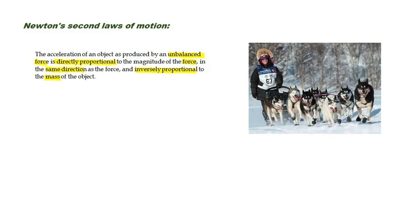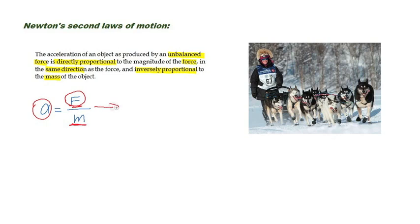In simple terms, a equals F over m. When we have an unbalanced force, we will have acceleration. This acceleration is proportional to the amount of the unbalanced force and inversely proportional to the mass of the object. We can write this in the more conventional form: F equals m times a.